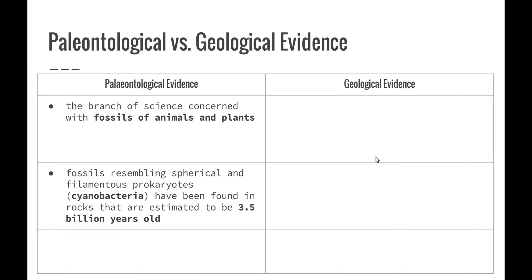Fossils resembling spherical and filamentous prokaryotes in the form of cyanobacteria have been found in rocks that are estimated to be 3.5 billion years old. So that's a really good example of some paleontological evidence that has helped to give us a bit of an idea of the origins of life on earth.